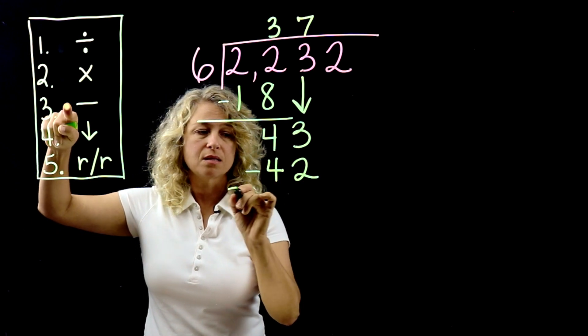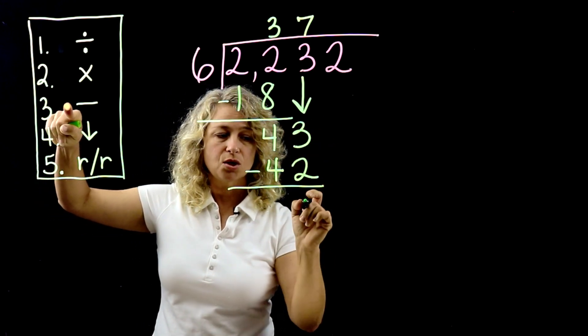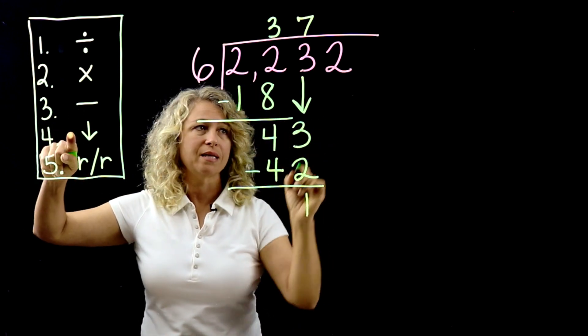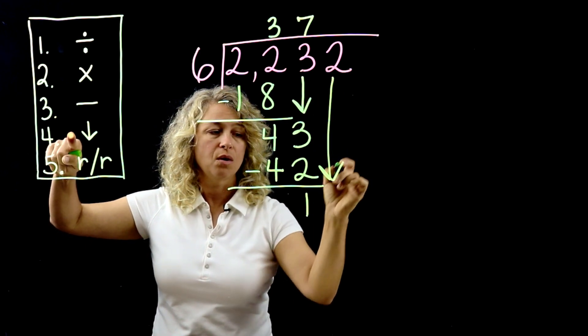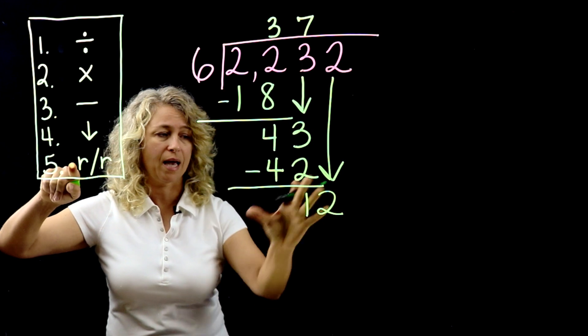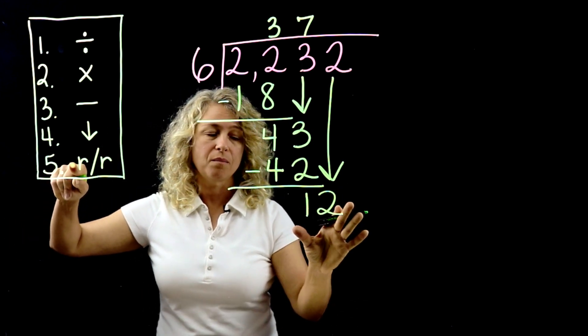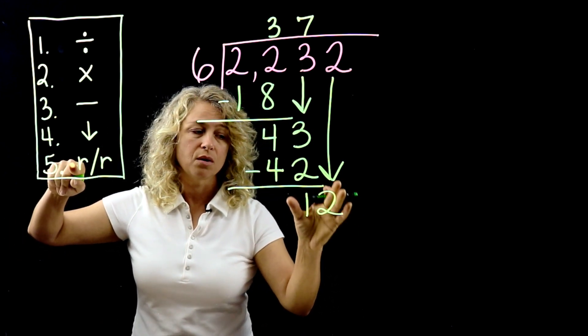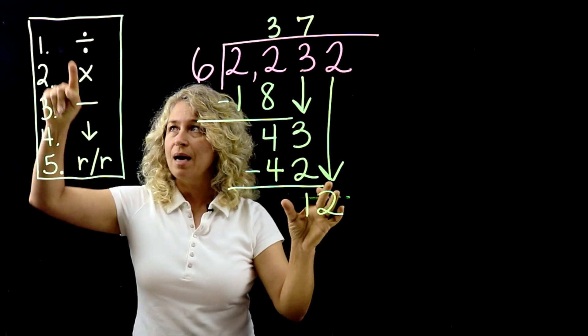Now step 3, subtract. 3 minus 2. And then bring down your next number, which is 2. Now you're back to the same thing. Repeat or remainder? Is this the remainder? No, we're not finished yet. So repeat back to the beginning step.